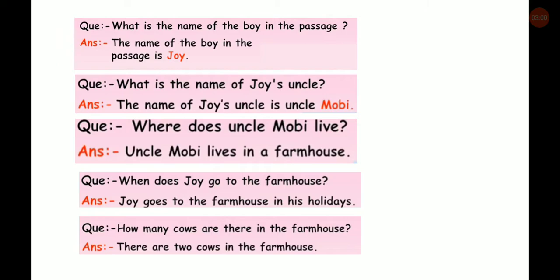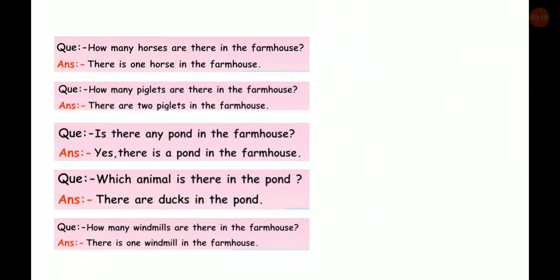The next question: when does Joy go to the farmhouse? Joy goes to the farmhouse in his holidays. How many cows are there in the farmhouse? There are two cows in the farmhouse. How many horses are there? There is one horse in the farmhouse. How many piglets are there? There are two piglets in the farmhouse.